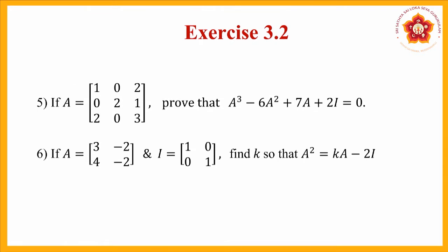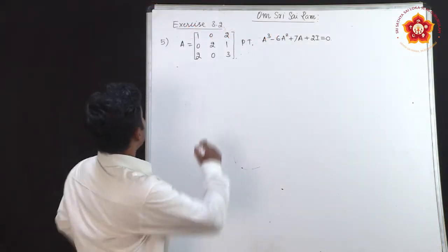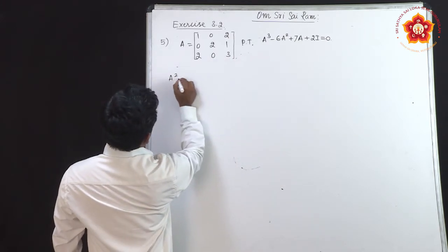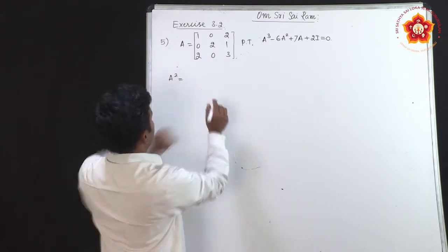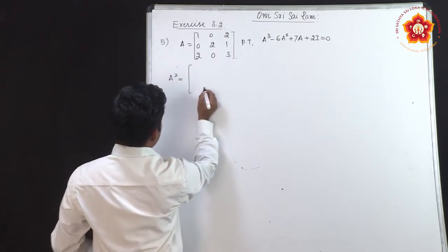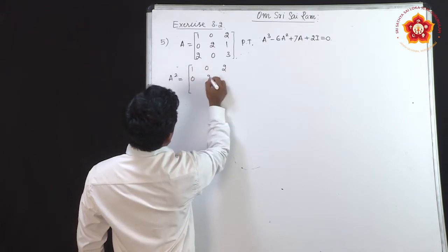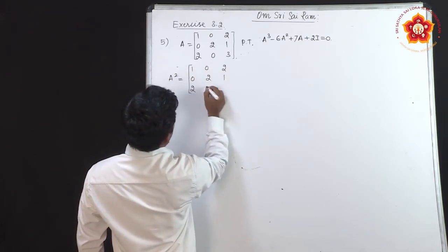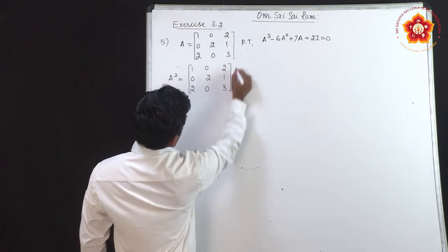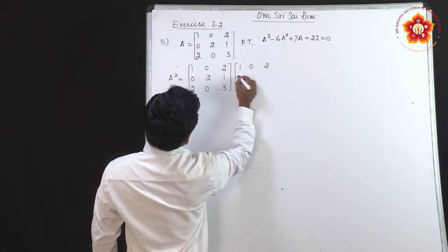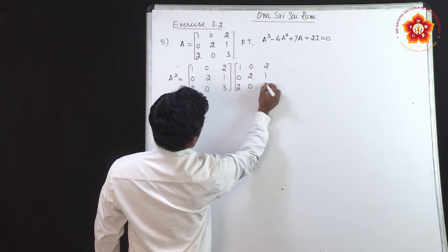We have to prove that A³ - 6A² + 7A + 2I = 0. First, we have to find A². A² = A × A. So we multiply A by itself: [1,0,2; 0,2,1; 2,0,3] × [1,0,2; 0,2,1; 2,0,3]. For the first row, first column: 1×1 + 0×0 + 2×2 = 5. First row, second column: 0. First row, third column: 1×2 + 0×1 + 2×3 = 8.